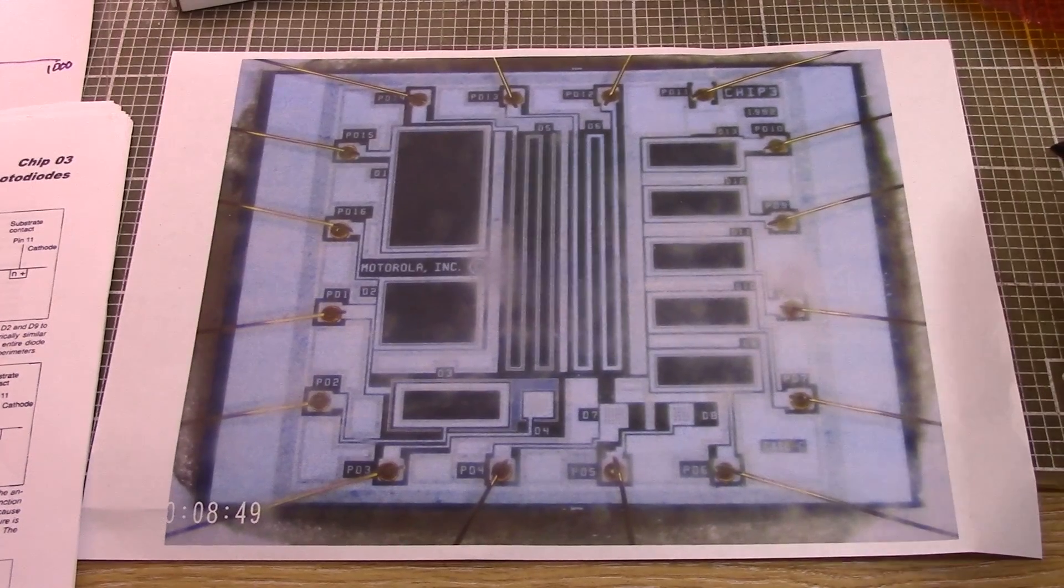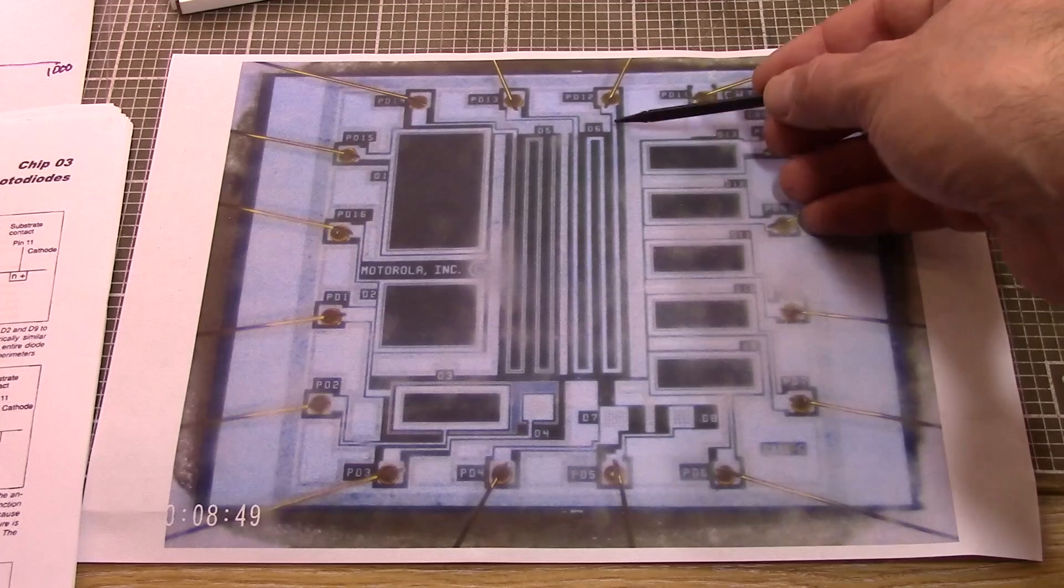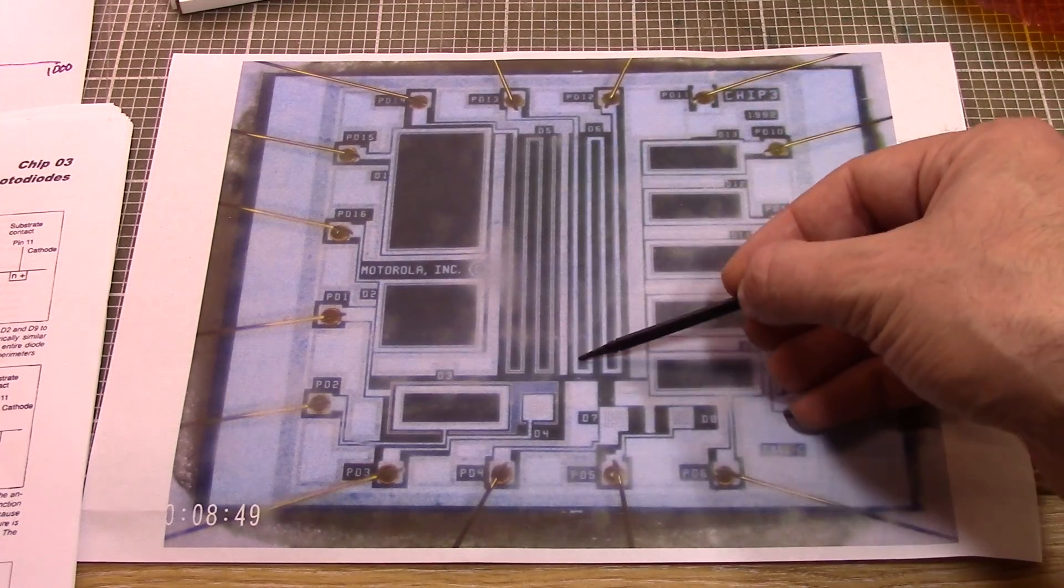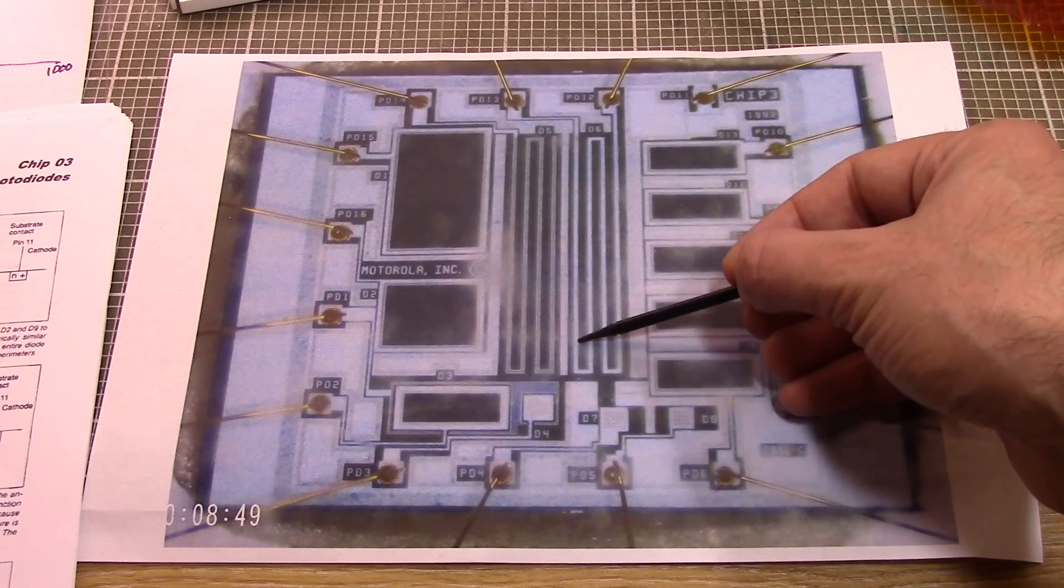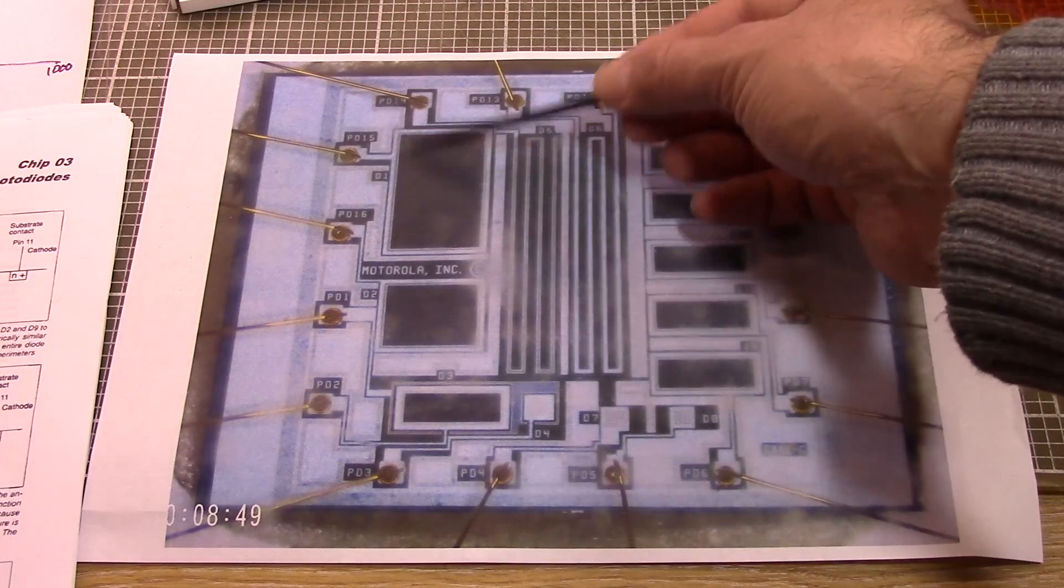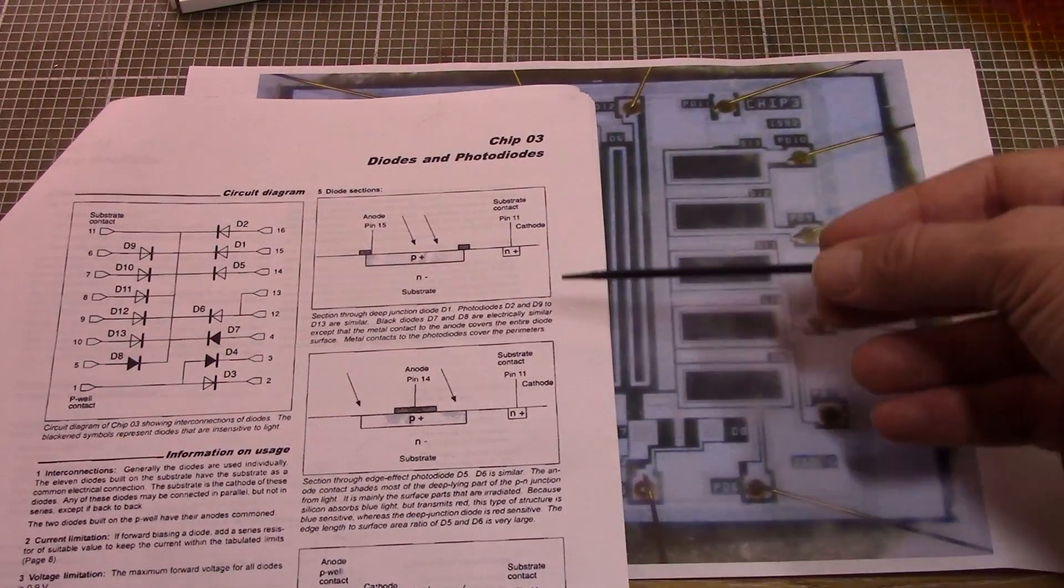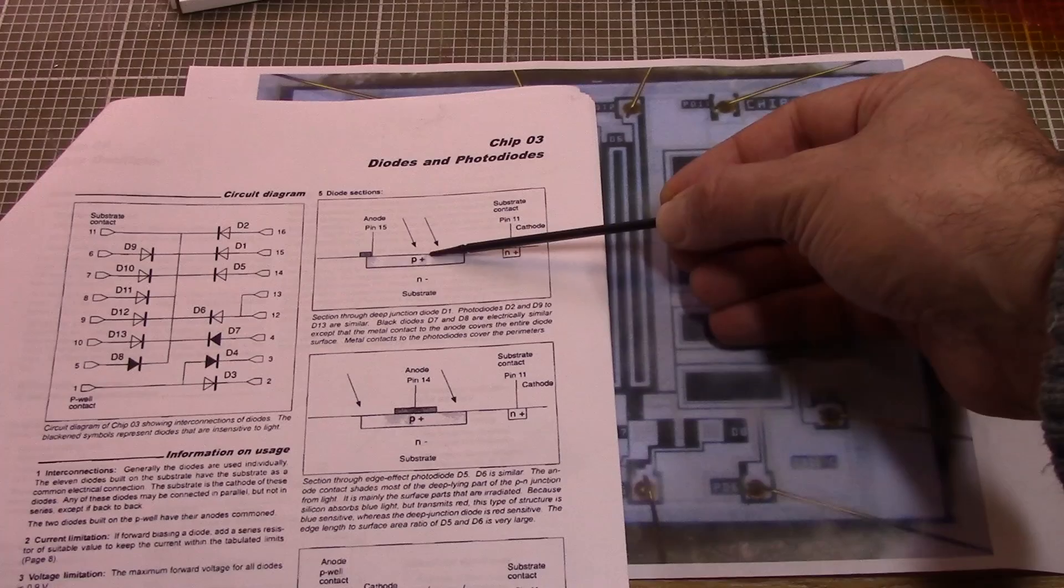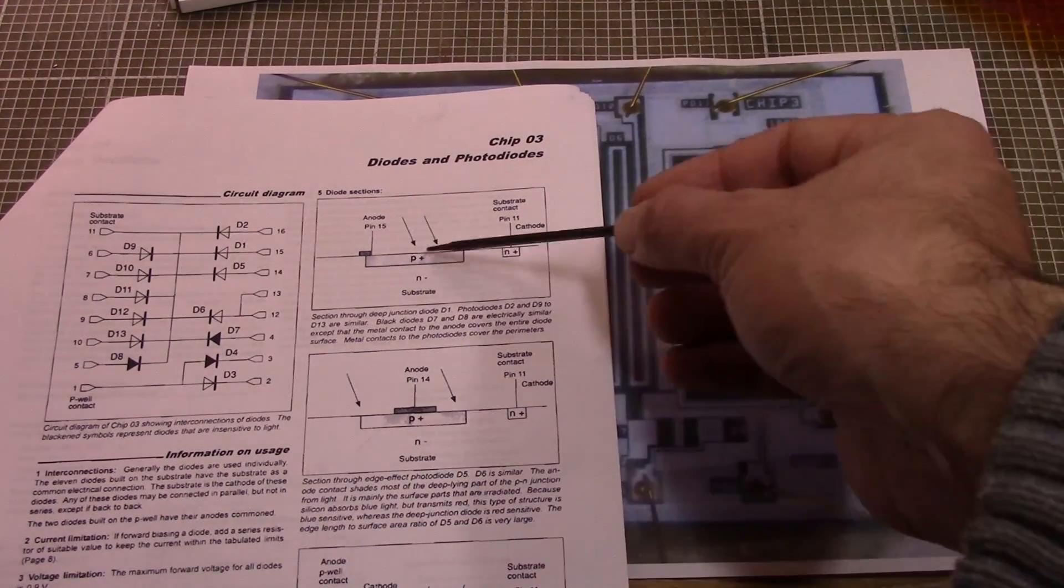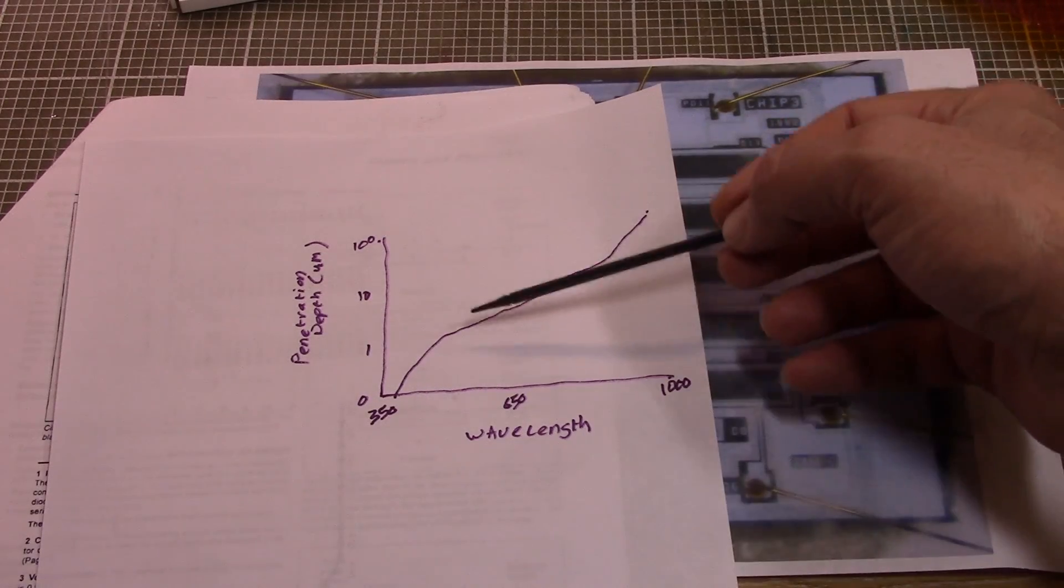So the next thing I wanted to have a look at was these edge diodes. These have got the metal anode obscuring most of the diode body, so just the edges of the diode are actually reactive to light. The alternative is this, which is called a deep junction diode. In fact, here's a better diagram. So these are just fairly deeply embedded in the substrate and they're more responsive to red light.